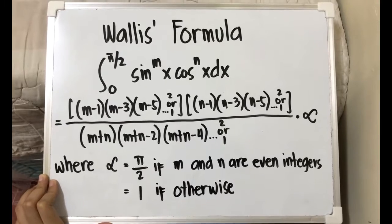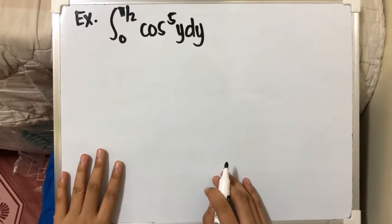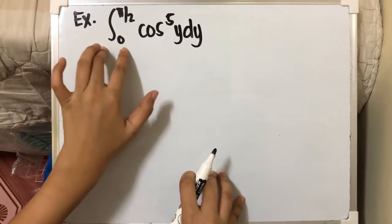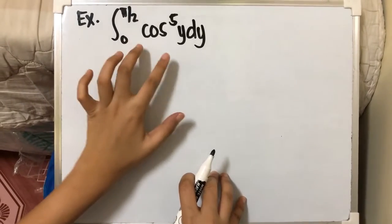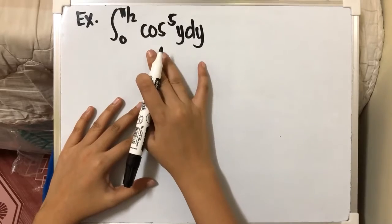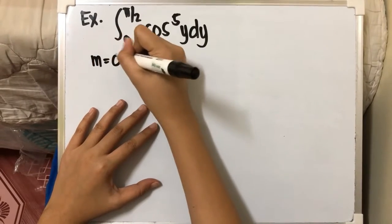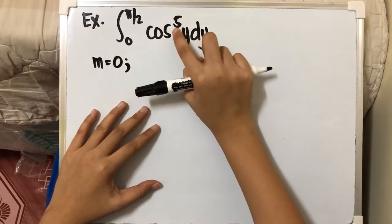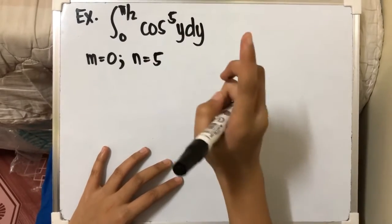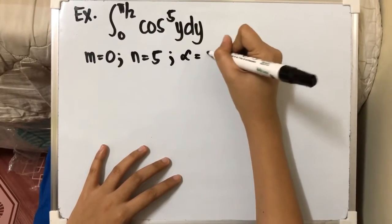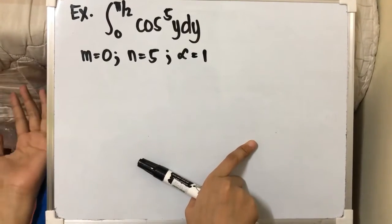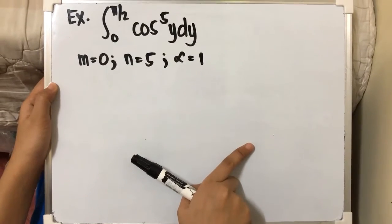We have an example: the definite integral of cos raised to 5, y dy from 0 to pi over 2. Since our limits are already correct, we look at our integrand. Wallis' formula involves sin raised to mx, but since there is no sine here, m is equal to 0. The exponent of cosine is n, so n equals 5. Our lambda will equal 1 since the exponent is not an even integer. Let's proceed solving this using Wallis' formula.